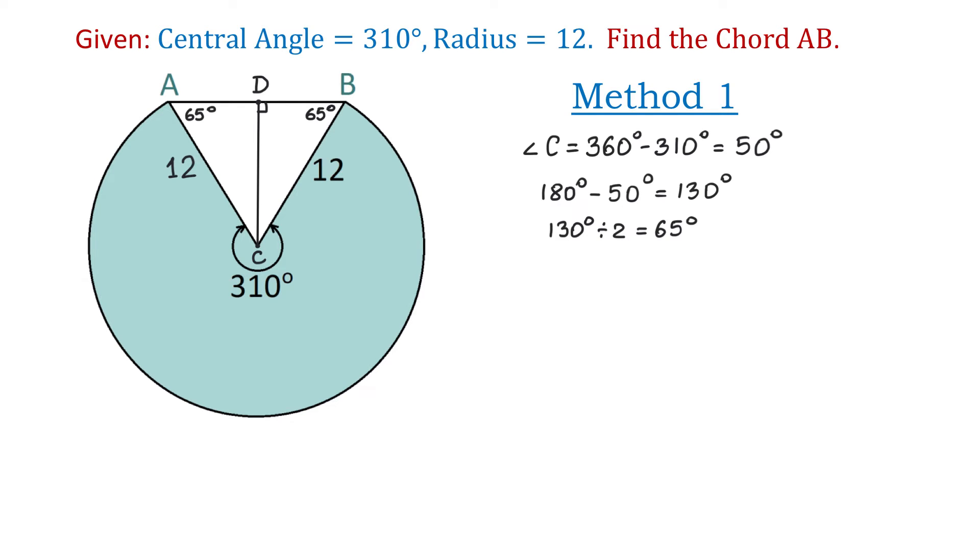We can say that cosine of 65 degrees equals the adjacent side BD divided by hypotenuse BC. So cosine of 65 degrees equals BD divided by hypotenuse BC which is 12.